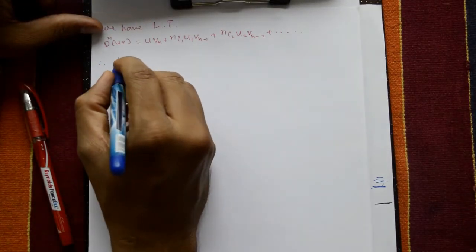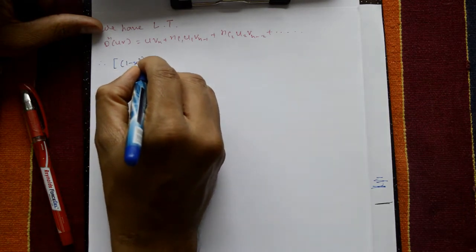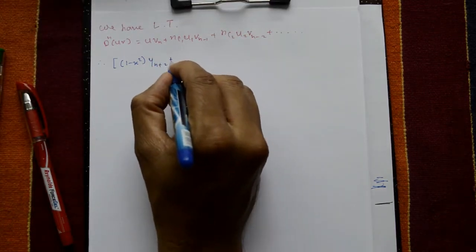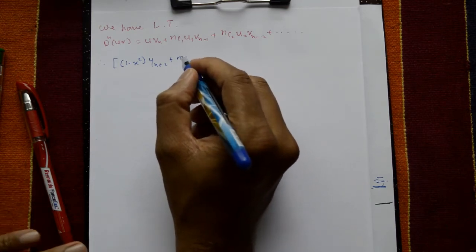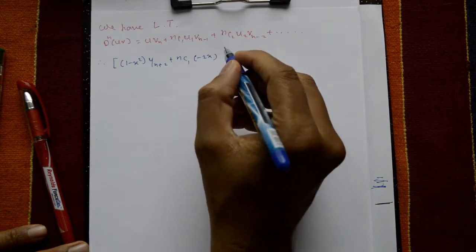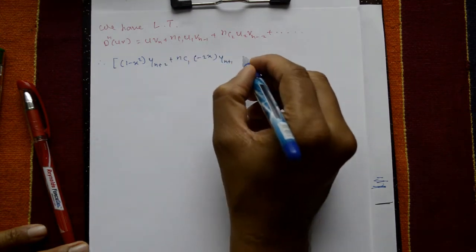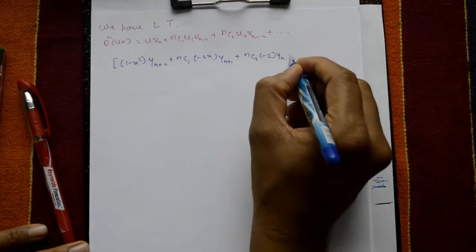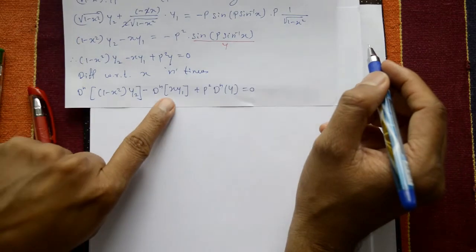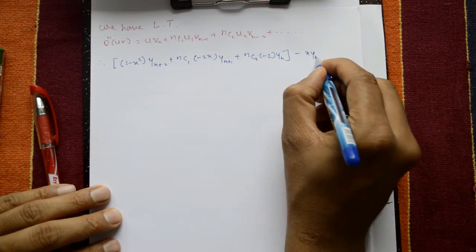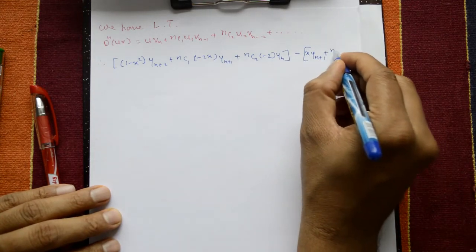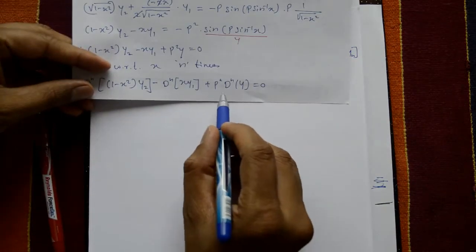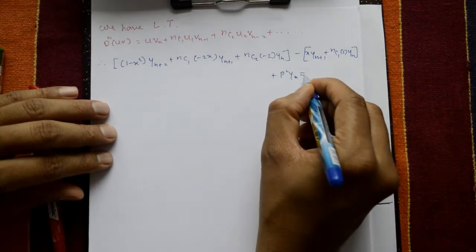Applying Leibniz theorem to the first term (1 - x²) y₂: we get (1 - x²) yₙ₊₂ + nC1·(−2x) yₙ₊₁ + nC2·(−2) yₙ. For the second term x y₁: x yₙ₊₁ + nC1·(1)·yₙ. Last term: p² yₙ = 0.